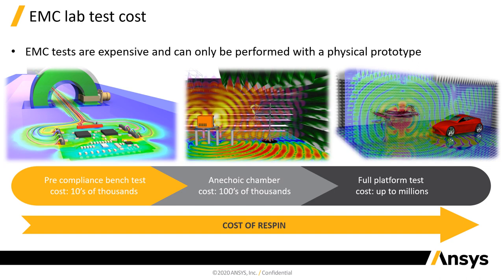If you need a radiated emission test, for example, you might need a semi-anechoic or anechoic chamber, and you need some of your staff to go over there and perform those tests, or you can hire third-party companies to do that. But if you need to change the product at that stage, including all the costs regarding the tests and the man-hours involved, it could go up to hundreds of thousands of dollars.